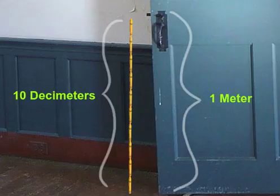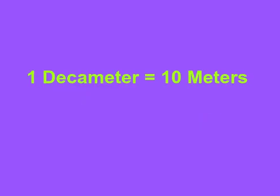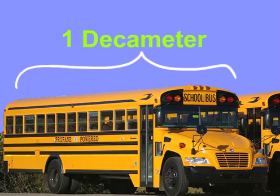For measurements longer than a meter, we also multiply or divide by 10. 1 decameter equals 10 meters. To help visualize this, a three-story building or a school bus is about 1 decameter.